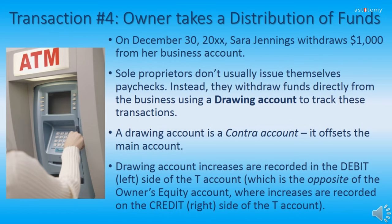Now it's time to tackle Transaction 4, where an owner takes a distribution of funds. On December 30, 20XX, Sarah Jennings withdraws $1,000 from her business account. Sole proprietors do not usually issue themselves paychecks; instead they withdraw funds directly from the business, tracked using a drawing account named Sarah Jennings Drawing. At the end of the accounting cycle, the drawing account is closed out and adjusted into the owner's equity account. A drawing account is a contra account, which offsets the main account; increases are recorded on the debit left side.